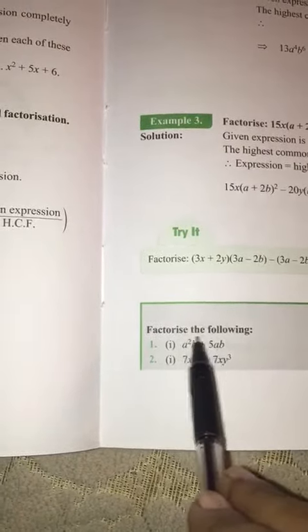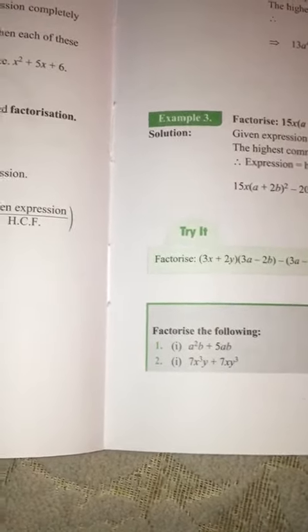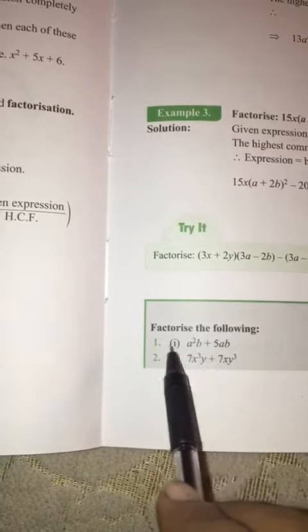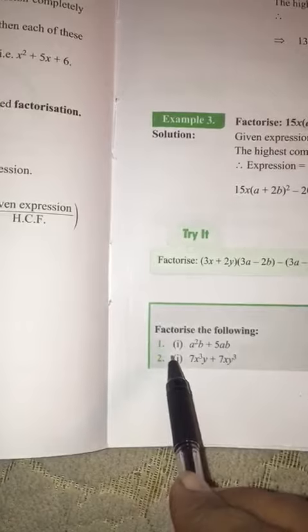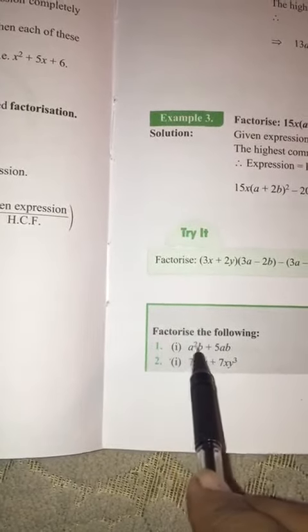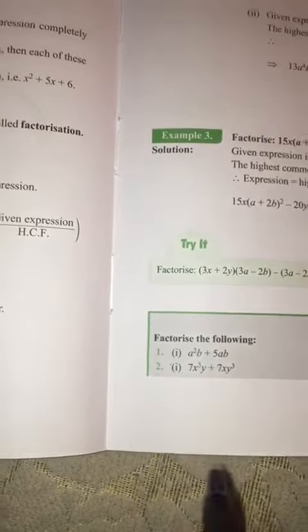If it is divided by one common table, then we have to take that common factor out. Similarly, if any letter from the literal coefficients is common, we have to take that common. Like this, we can start this method.